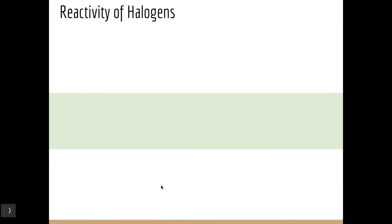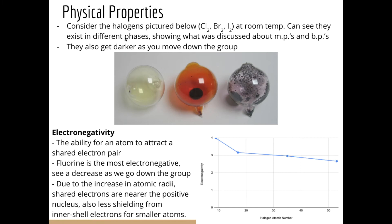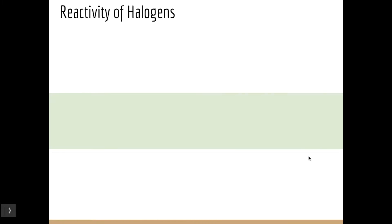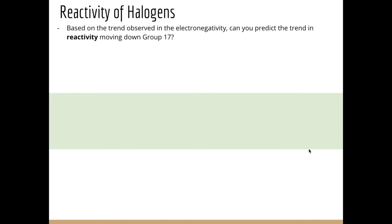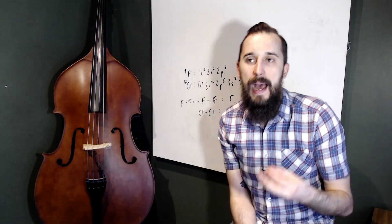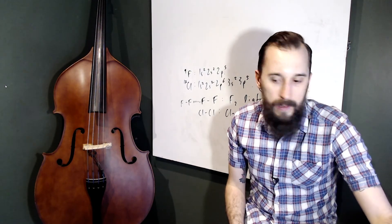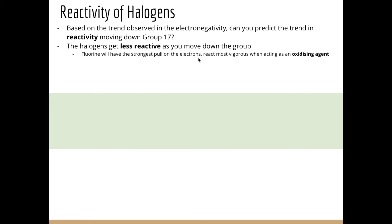Moving on to reactivity. Based on the electronegativity trend, can you predict how reactivity changes down the group? We see a decrease — the halogens get less reactive as we go down the group. This is rationalized the same way as the electronegativity trend: fluorine has the strongest pull on electrons due to its small atomic radius and minimal inner shielding, so it reacts most vigorously.